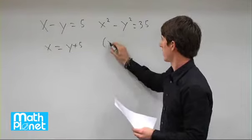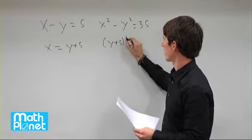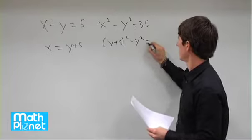Plugging that in here gives us y plus 5 squared minus y squared equals 35.